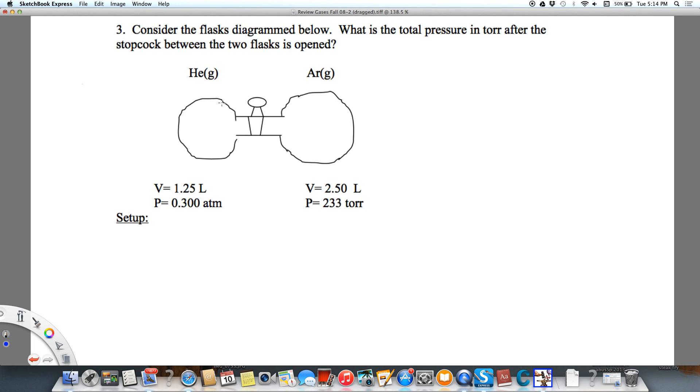Here we have a situation where we've got these two flasks. The one on the left contains helium and the one on the right contains argon. They're separated by what we call a stopcock. We're going to open that stopcock and you're going to get mixing. Helium is going to go this way and argon is going to go this way. What we want to know is the total pressure after mixing.